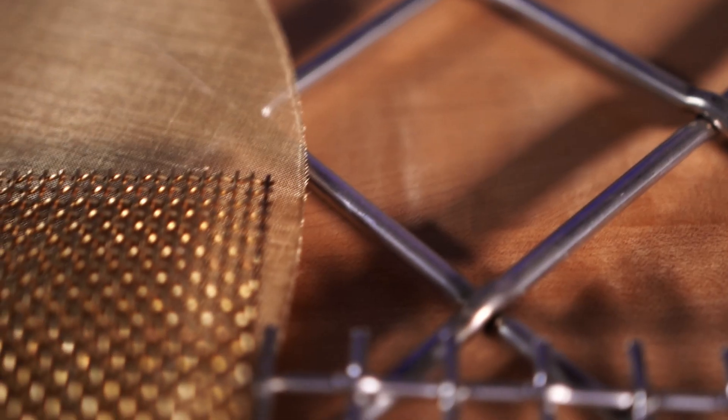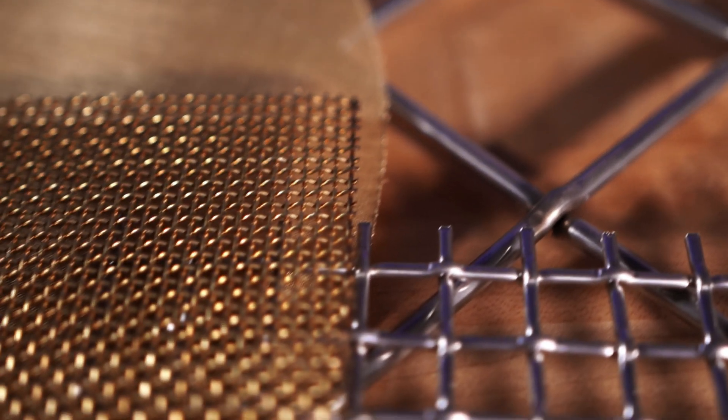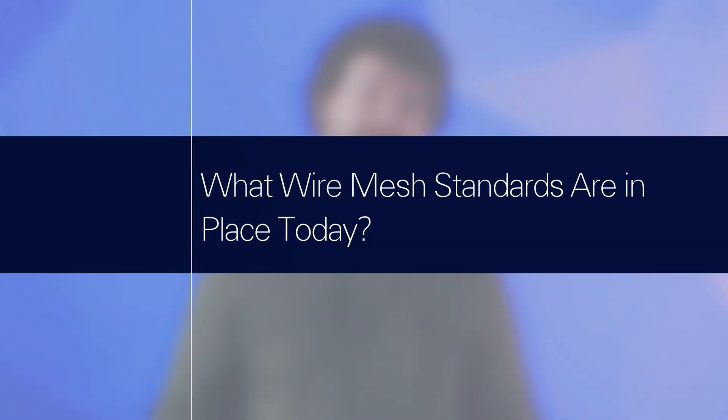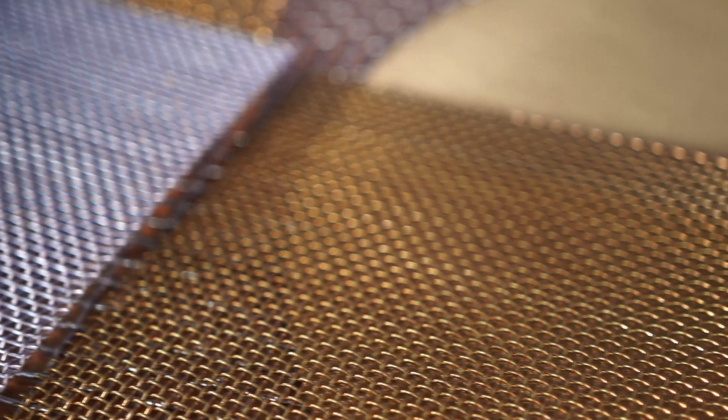In the world of woven wire mesh, standards are guidelines that define the acceptable wire mesh tolerances. They are meant to create a universal understanding of how wire mesh is fabricated and used in any specific industry. This ensures that products that reach the end user are safe and are what the customer expected. There are several wire mesh standards that control the level of quality for wire mesh, and the standards you should follow are naturally determined by the industry you work in. Here are six of the most prominent wire mesh standards practiced today.